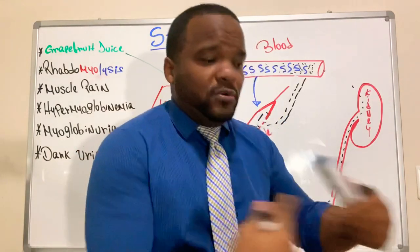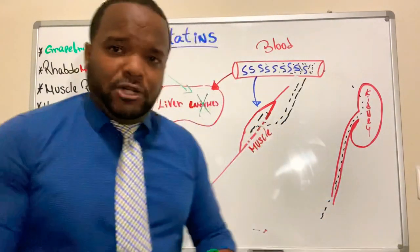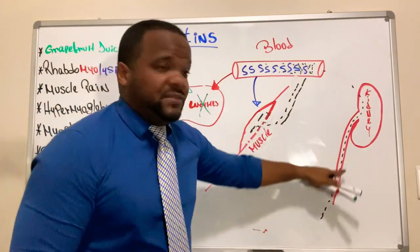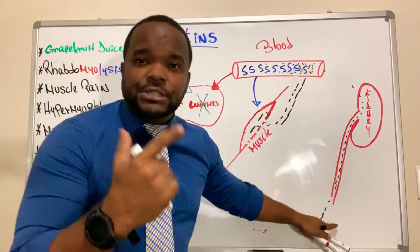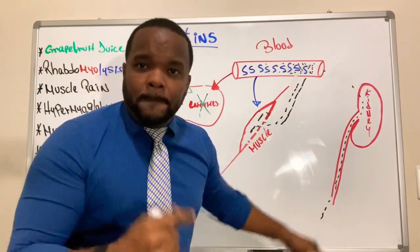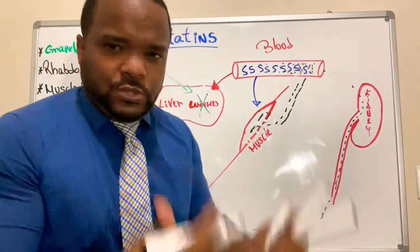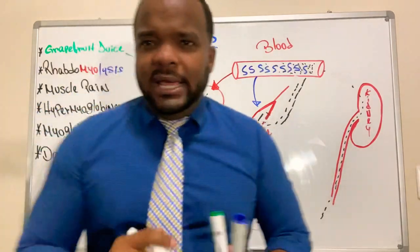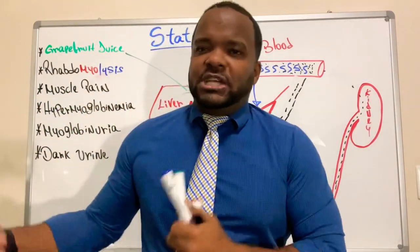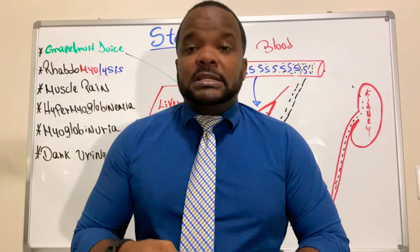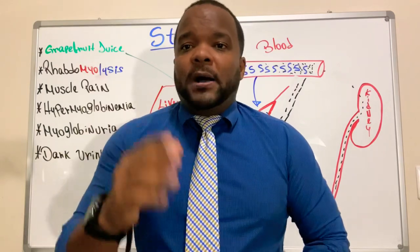Because the kidneys are trying to remove that myoglobin, the patient will describe their urine as dark — it looks like cola or soda. That dark urine is a sign telling you that the patient is showing signs and symptoms of rhabdomyolysis.